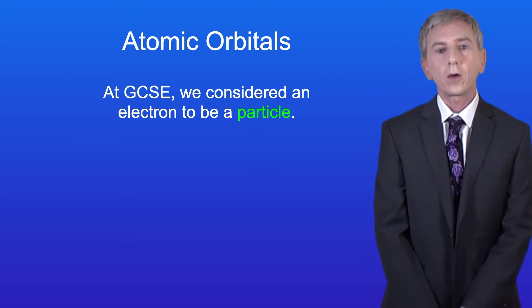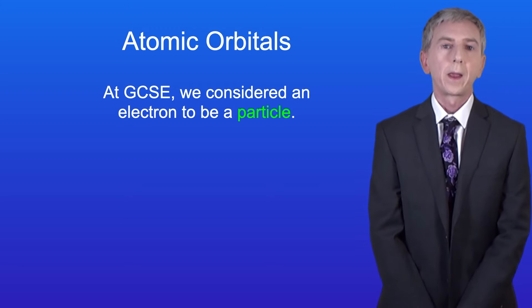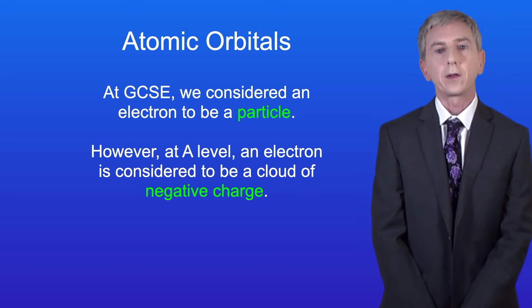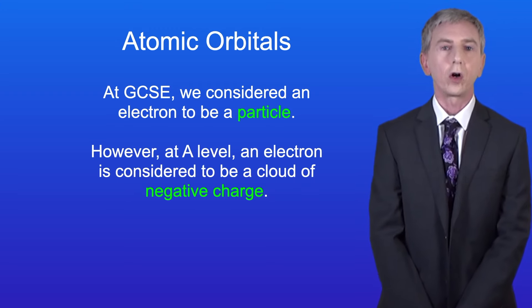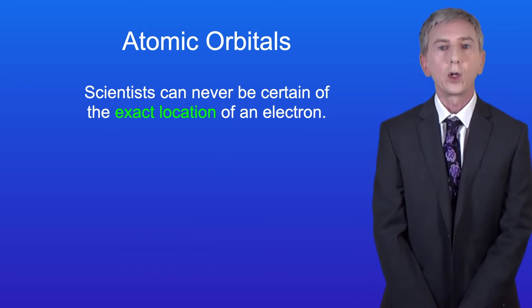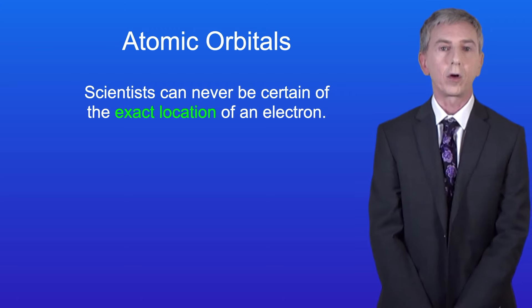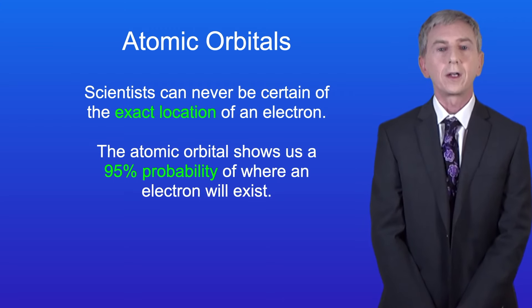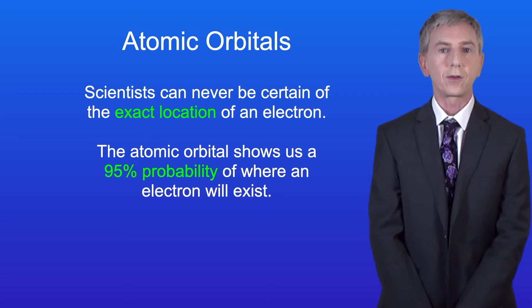Now at GCSE, we consider an electron to be a particle. However, at A-level, an electron is considered to be a cloud of negative charge, and the negative charge cloud has the shape of the orbital occupied by the electron. One idea you need to be aware of is that scientists can never be certain of the exact location of an electron. The atomic orbital shows us a 95% probability of where an electron will exist.